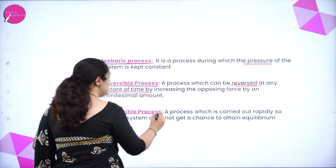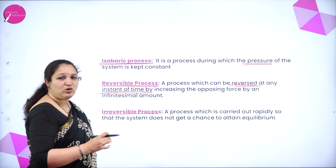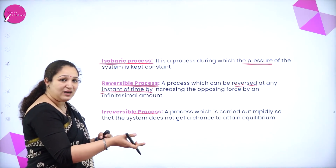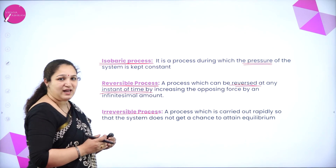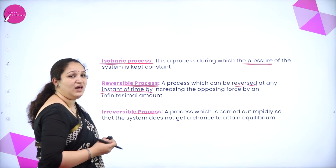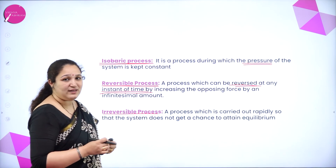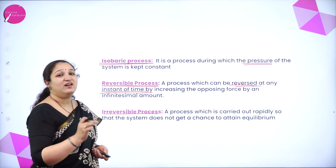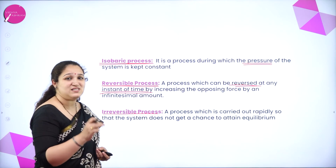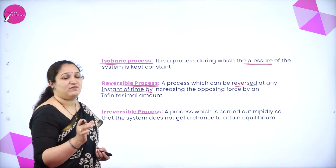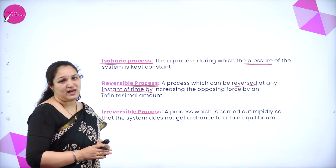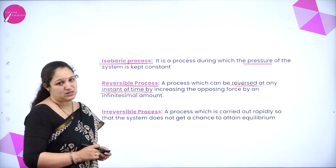The irreversible process is one in which the process is carried out so rapidly that you cannot reverse it — it has to happen only from one direction to the other. You cannot reverse the process, so we call it as the irreversible process. So these are the different types of thermodynamic process.